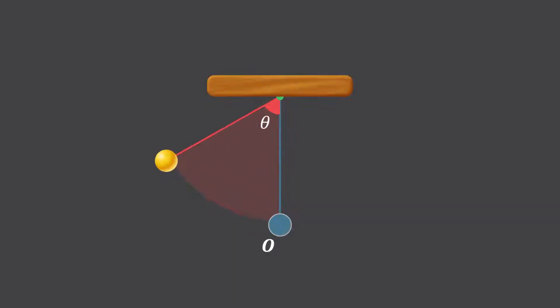If we displace the bob to an extreme position A, we still have its weight mg acting downwards. If we carry out the resolution of this force and break it down, we can see that we have a force mg cos θ acting in this direction and a force mg sin θ acting in this direction.